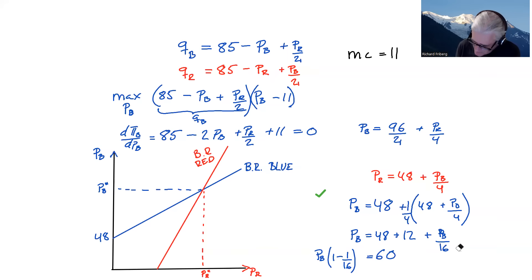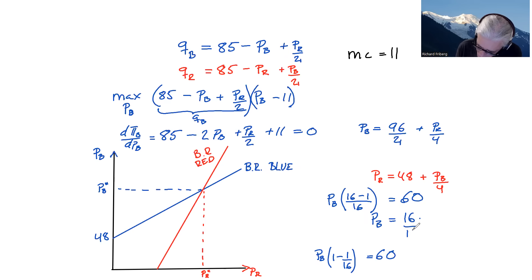Need to clean a bit as well again. So we have PB, 1 is equal to 16 over 16, right? So 16 minus 1 over 16 equals 60. Or PB equals 16 over 15 times 60. And that's equal to 64.